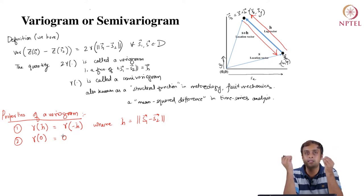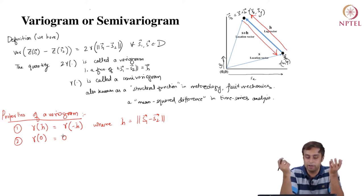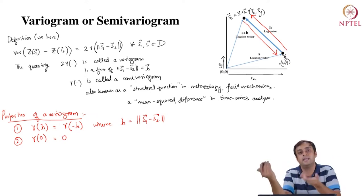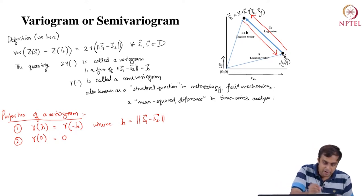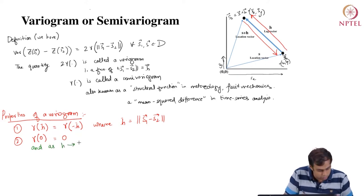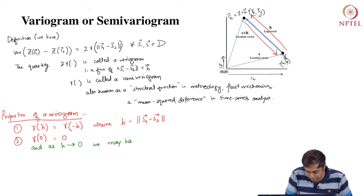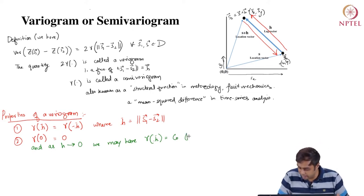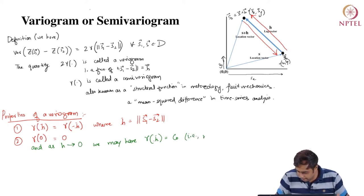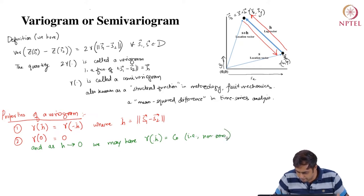The second property: gamma(0) equals 0. If there is no distance — we are basically looking at the same entity — then variance of Z(S1) minus Z(S1) will be exactly 0. And very critically, as H approaches 0, we may have gamma(H) equals C0, which is a non-zero entity. This C0 is called the nugget effect.